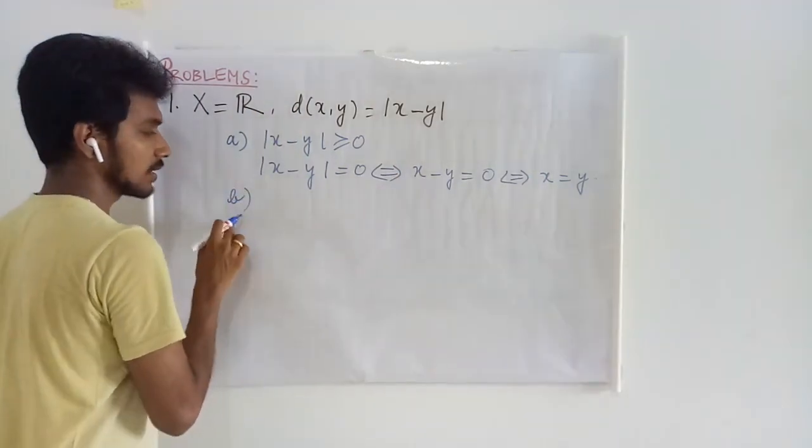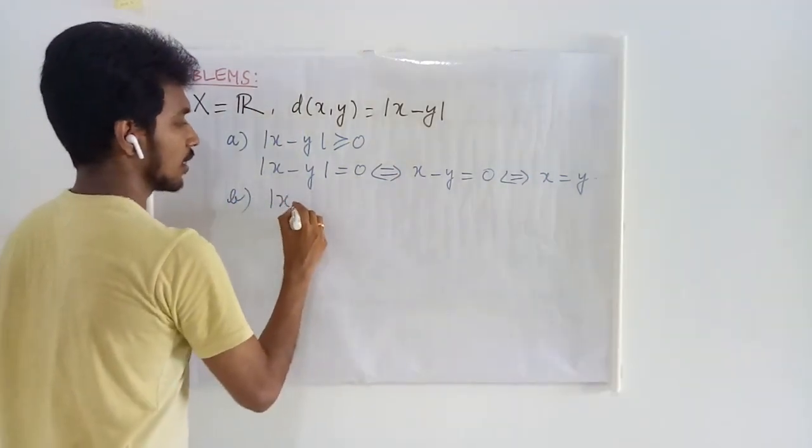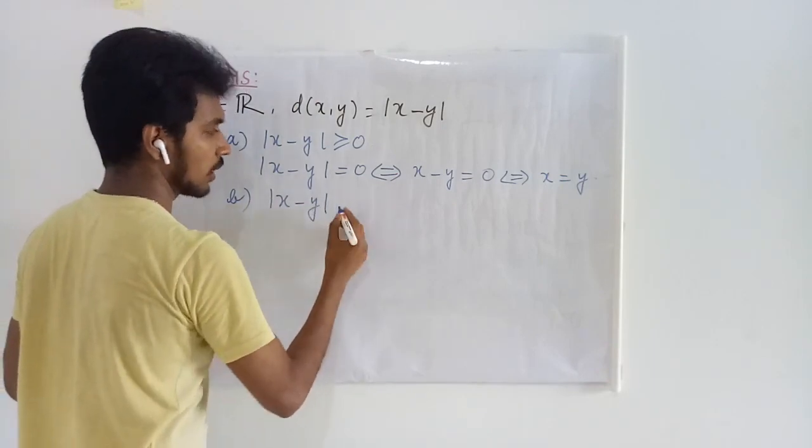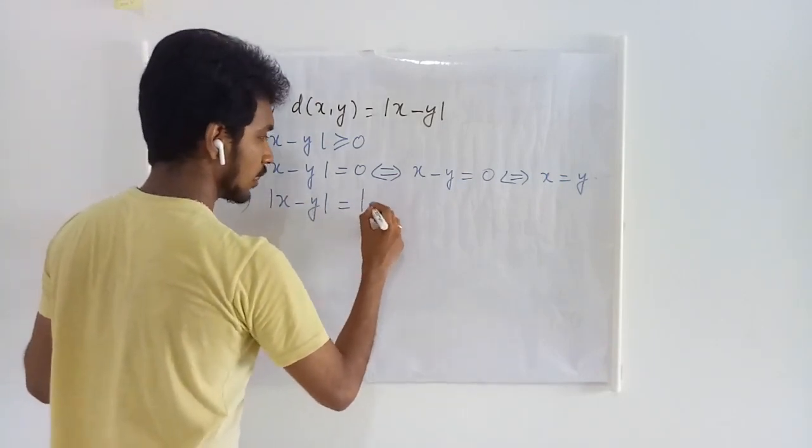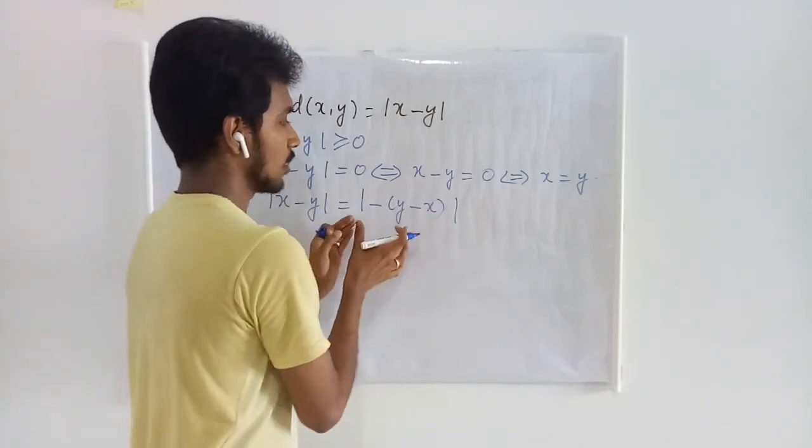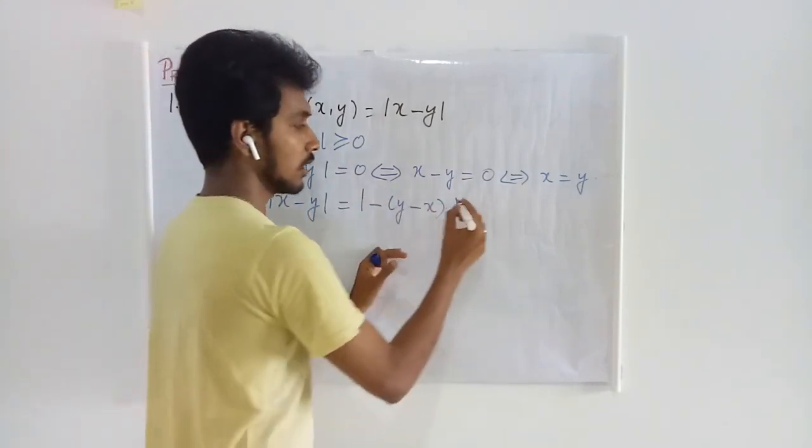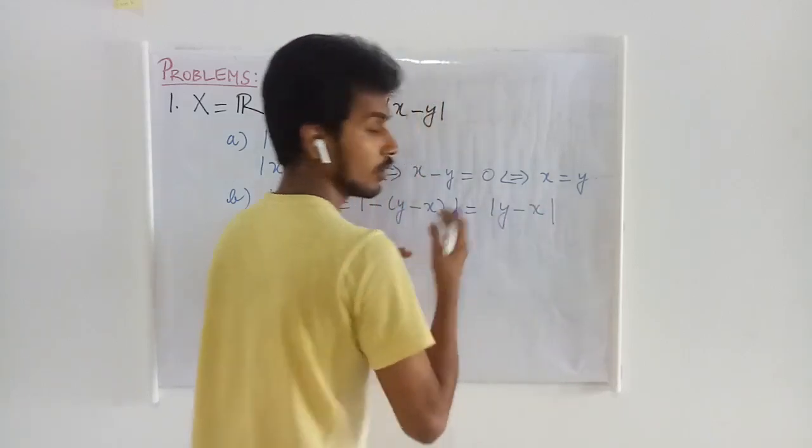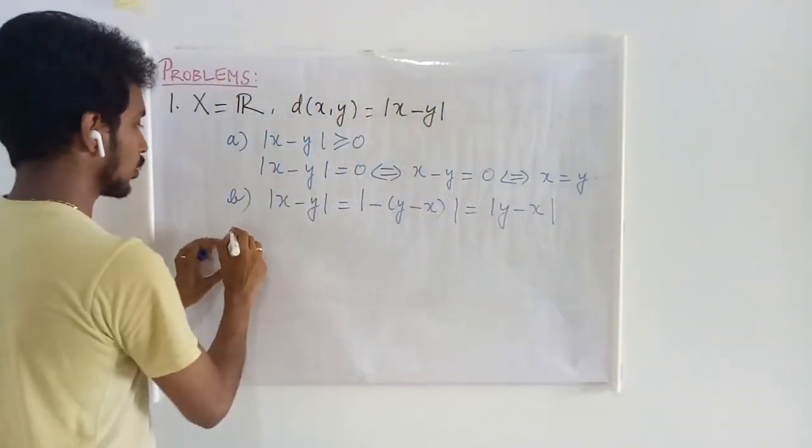The first condition is satisfied. The second condition is absolute of x minus y is nothing but minus times absolute of y minus x. Absolute of minus value is same as that of absolute of that value. Symmetry is satisfied.